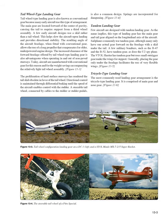Tail-wheel-type landing gear is also known as conventional gear because many early aircraft use this type of arrangement. The main gear are located forward at the center of gravity, causing the tail to require support from a third-wheel assembly. A few early aircraft designs use a skid rather than a tail wheel. This helps slow the aircraft upon landing and provides directional stability. The resulting angle of the aircraft fuselage, when fitted with conventional gear, allows the use of a long propeller that compensates for older, underpowered engine designs.